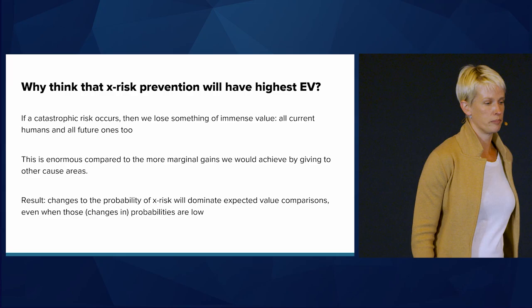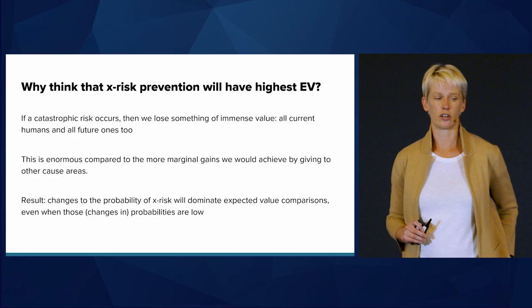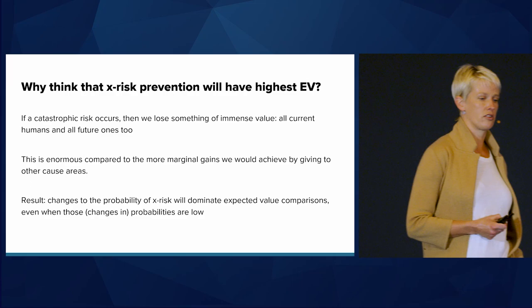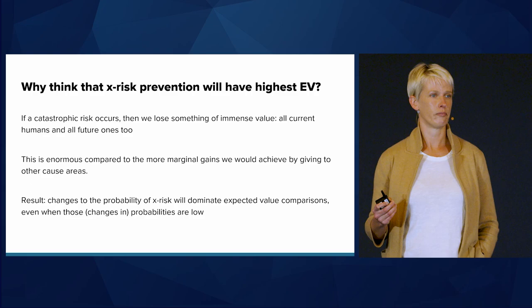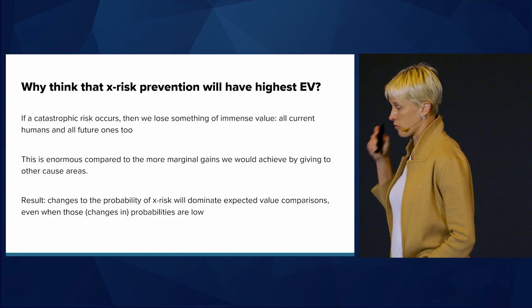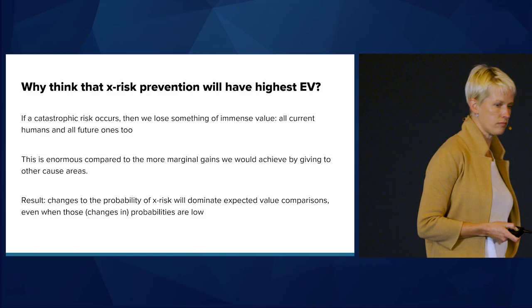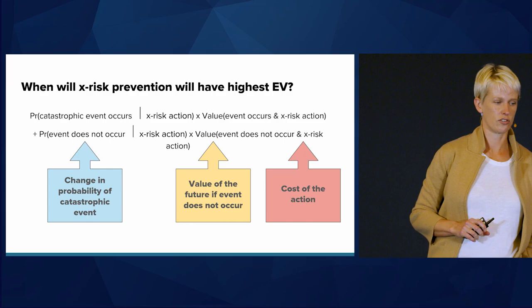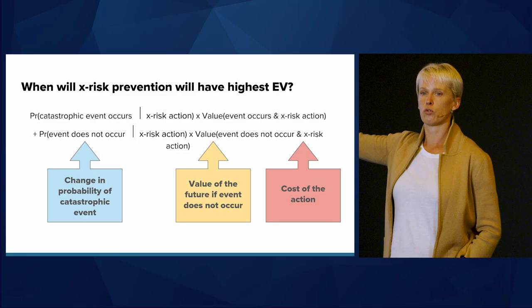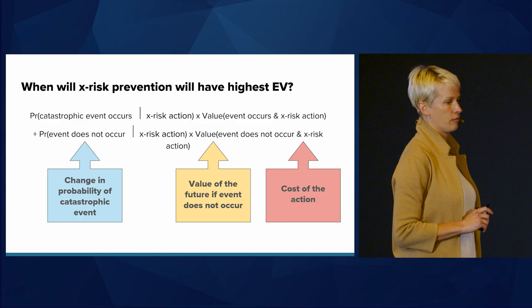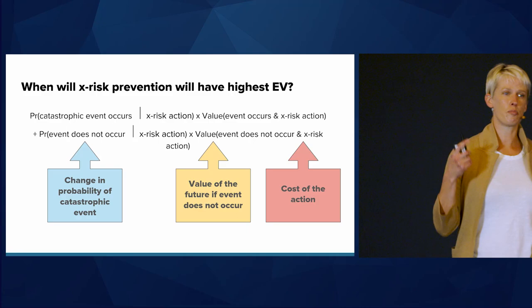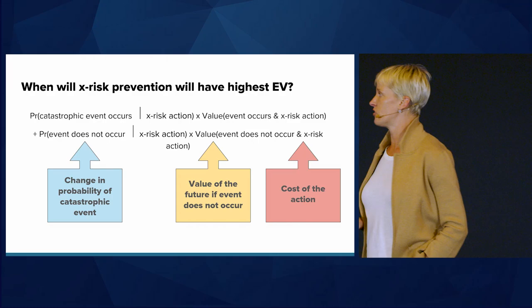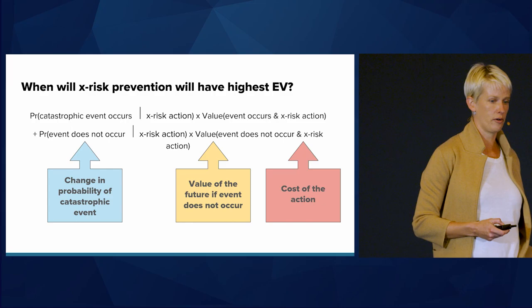If a catastrophic risk occurs, we lose something of immense value — all current humans and all future ones too. That's enormous compared to the more marginal gains we'd achieve by giving to other cause areas. So the result is that changes to the probability of x-risk will dominate expected value comparisons even when the changes in probability they yield are low. Looking at this expected value calculation, there are three components that are really important: one is the change in probability of a catastrophic event conditional on us doing this action; second is the value of the future if the event does not occur; and lastly, how much these actions cost.